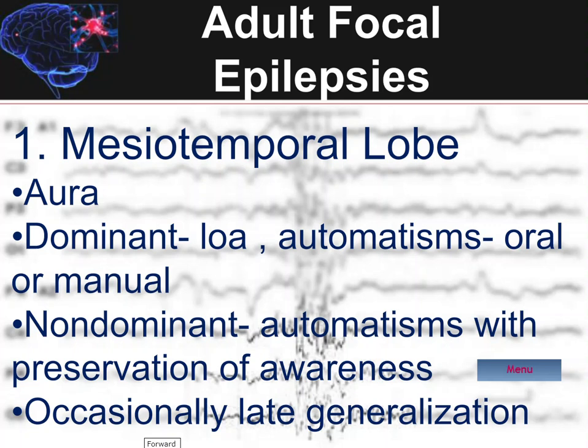The most common form of an adult focal seizure is that of a mesiotemporal lobe seizure, and these are generally recognizable by their fairly characteristic aura, which may be some sort of sensation of a butterfly in the stomach or the chest, or perhaps a psychic phenomenon such as the characteristic deja vu where they think that they've been there before, or the opposite, or even some emotional sensation such as fear.